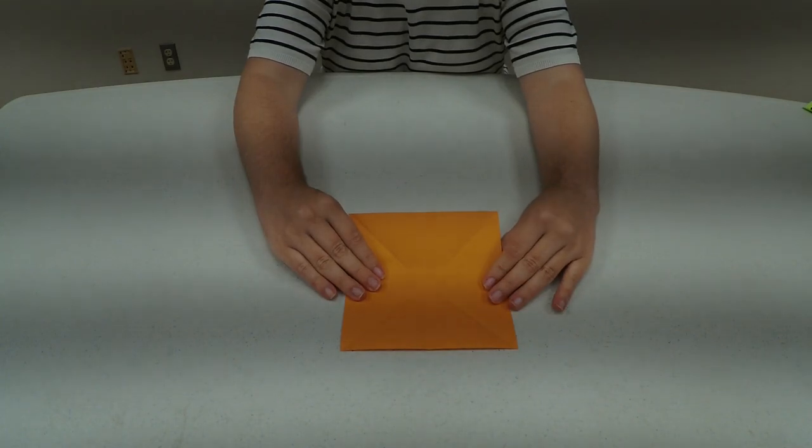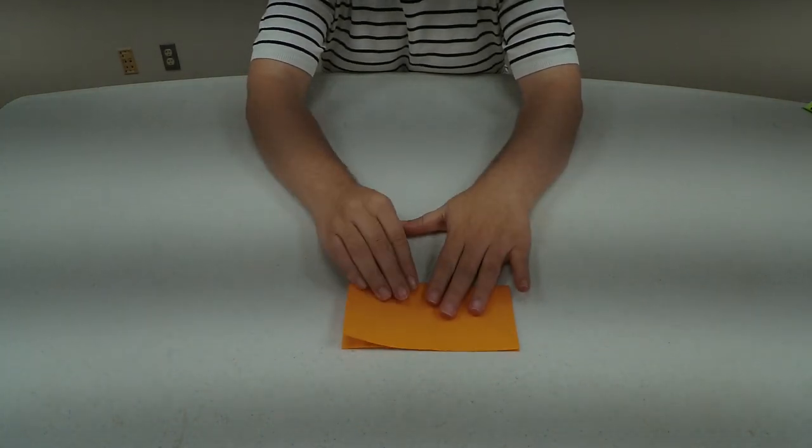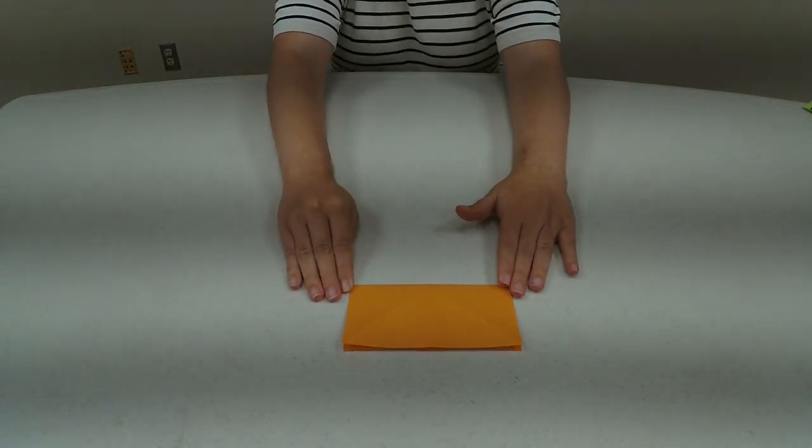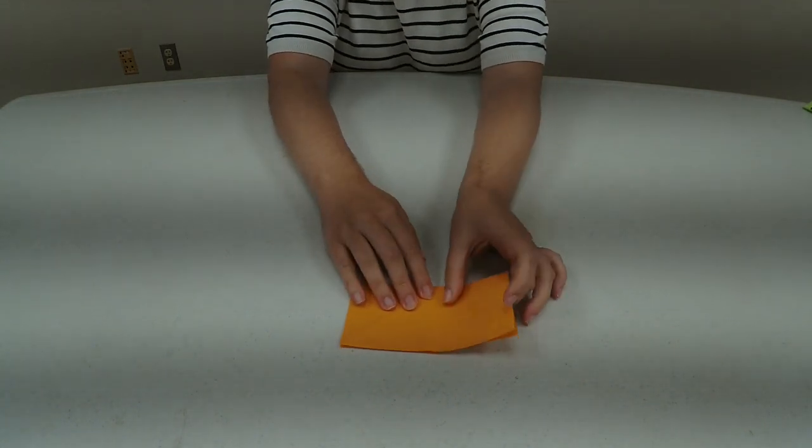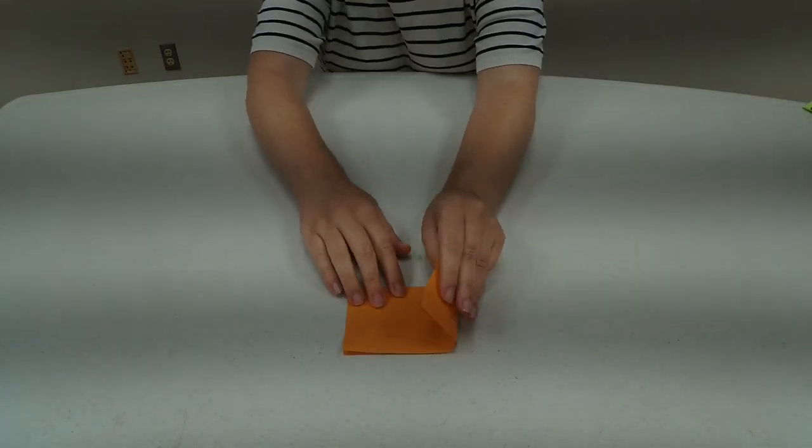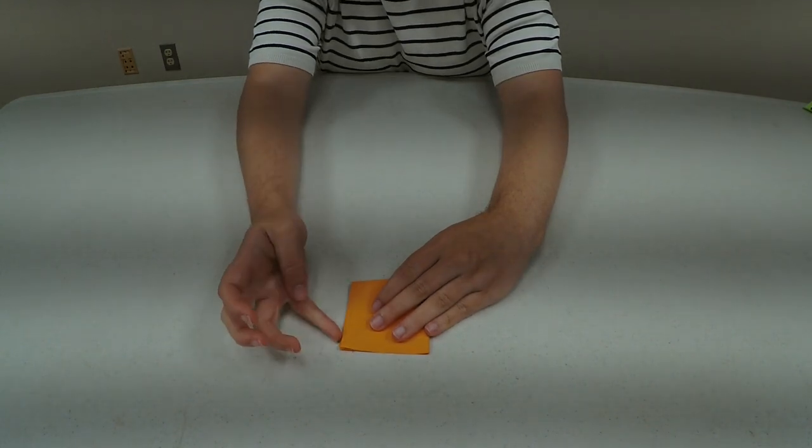Once again, you're going to turn it so it's a square and fold the top half down, and then you are going to fold it in half so you get a square.